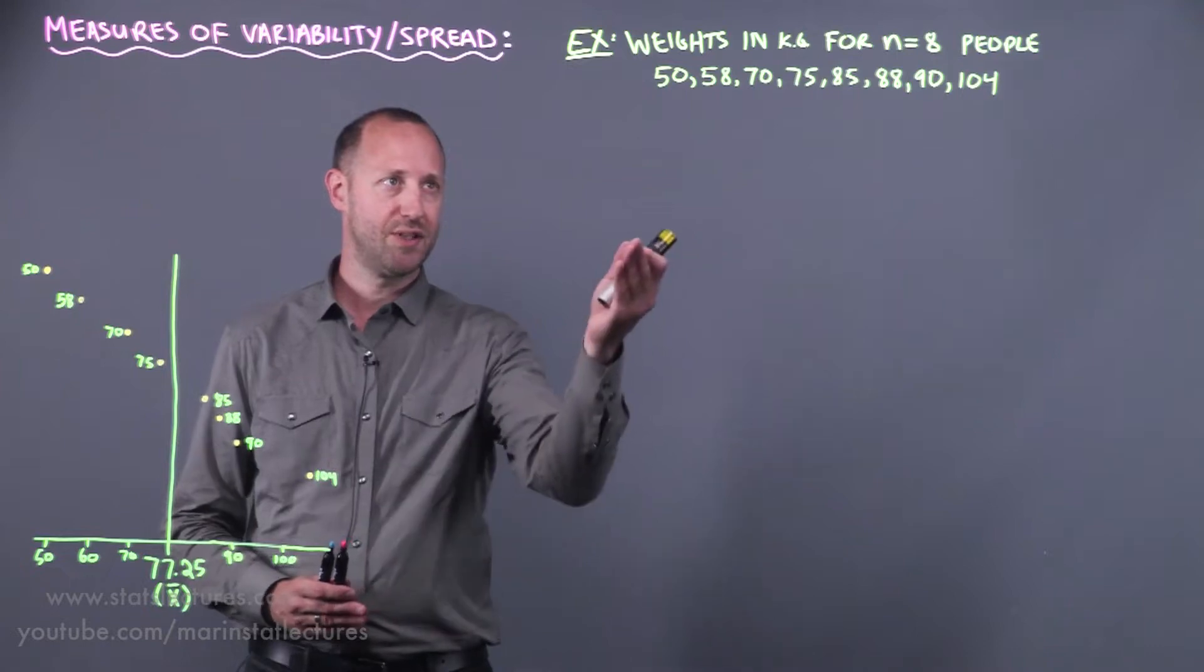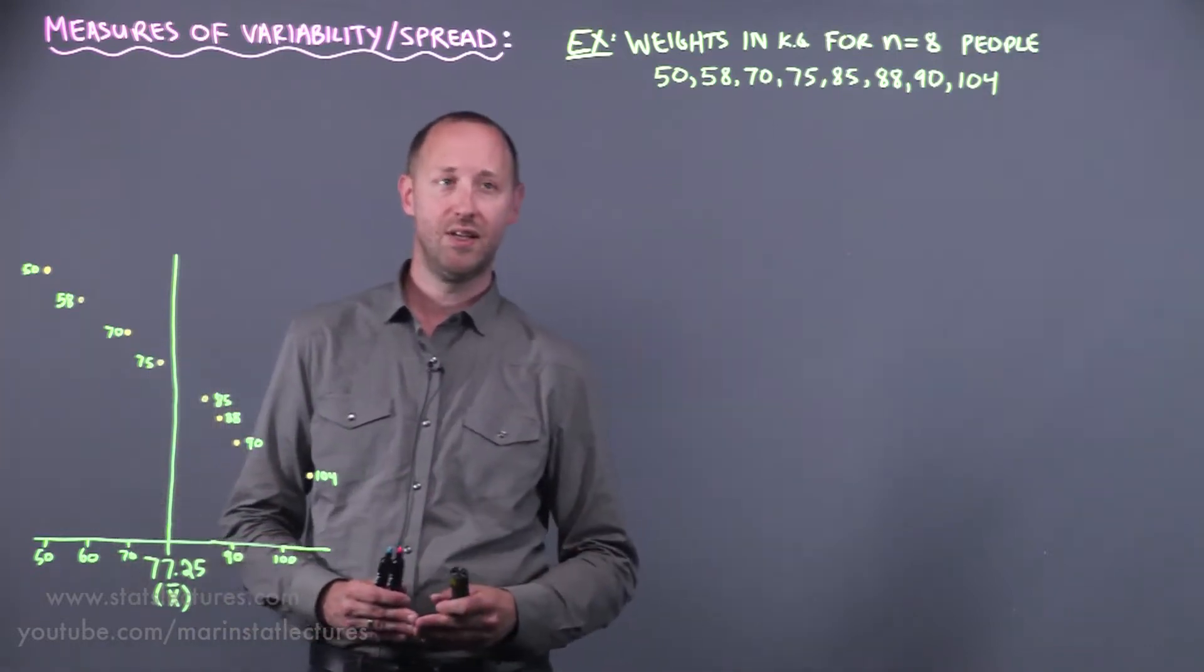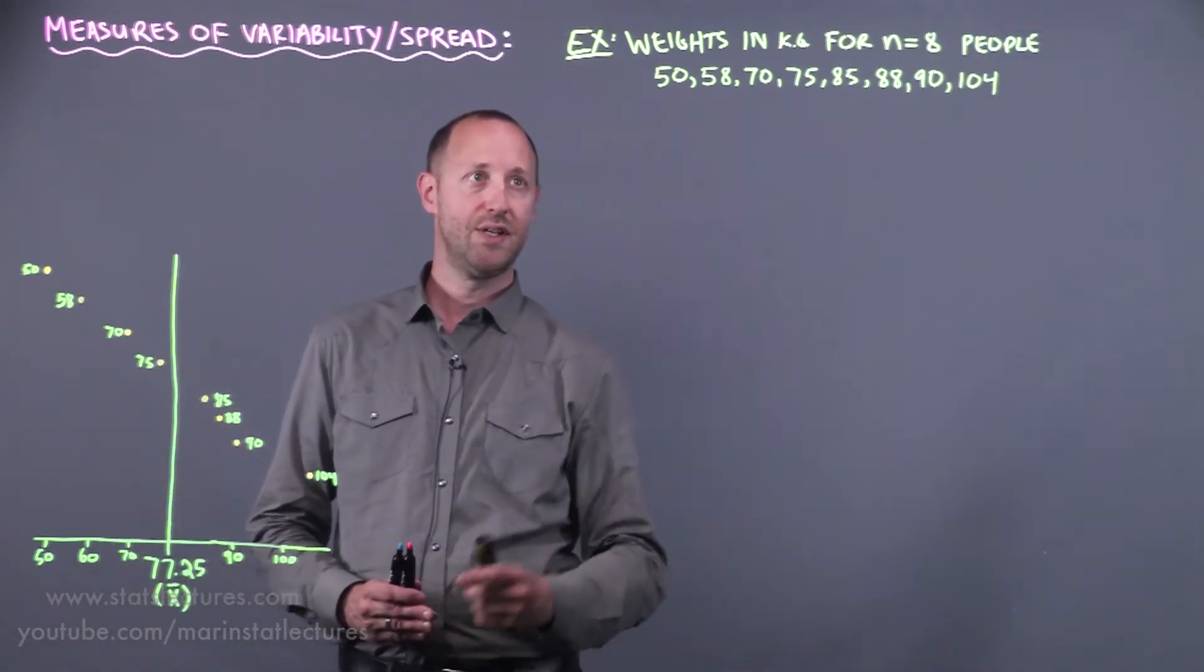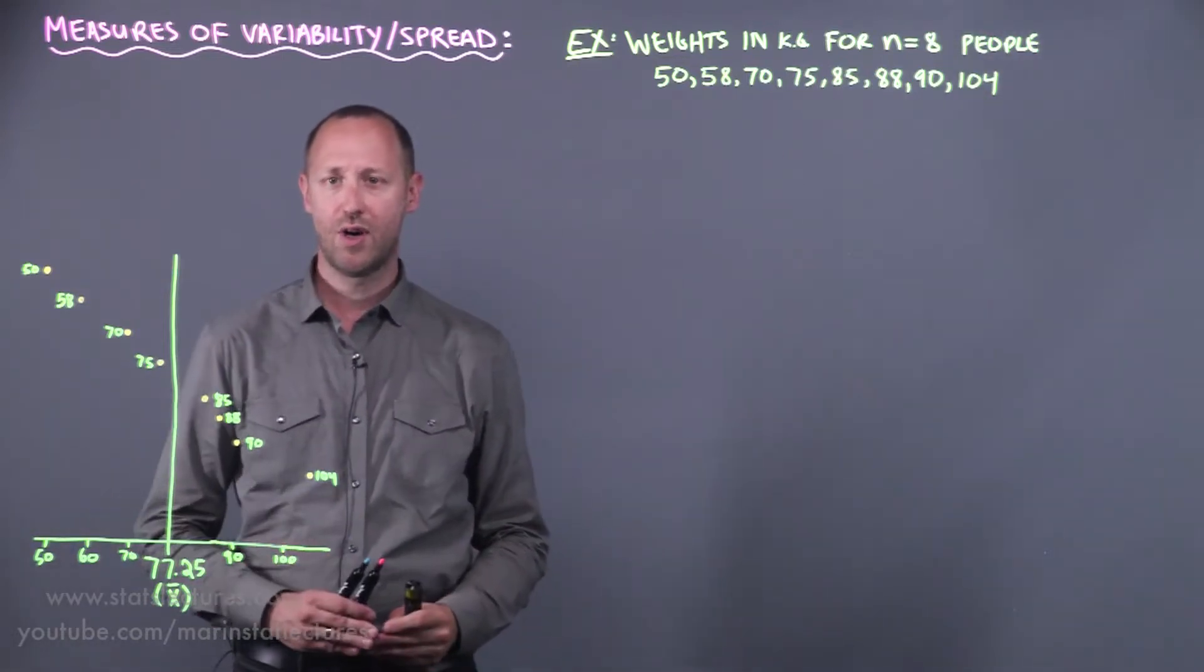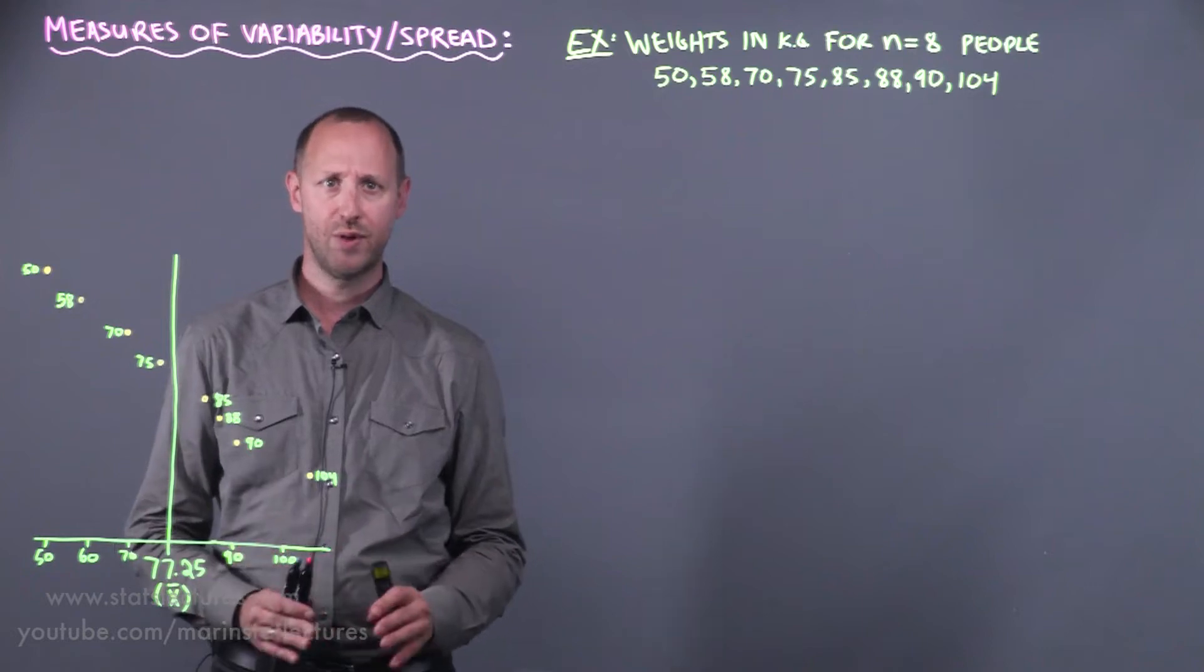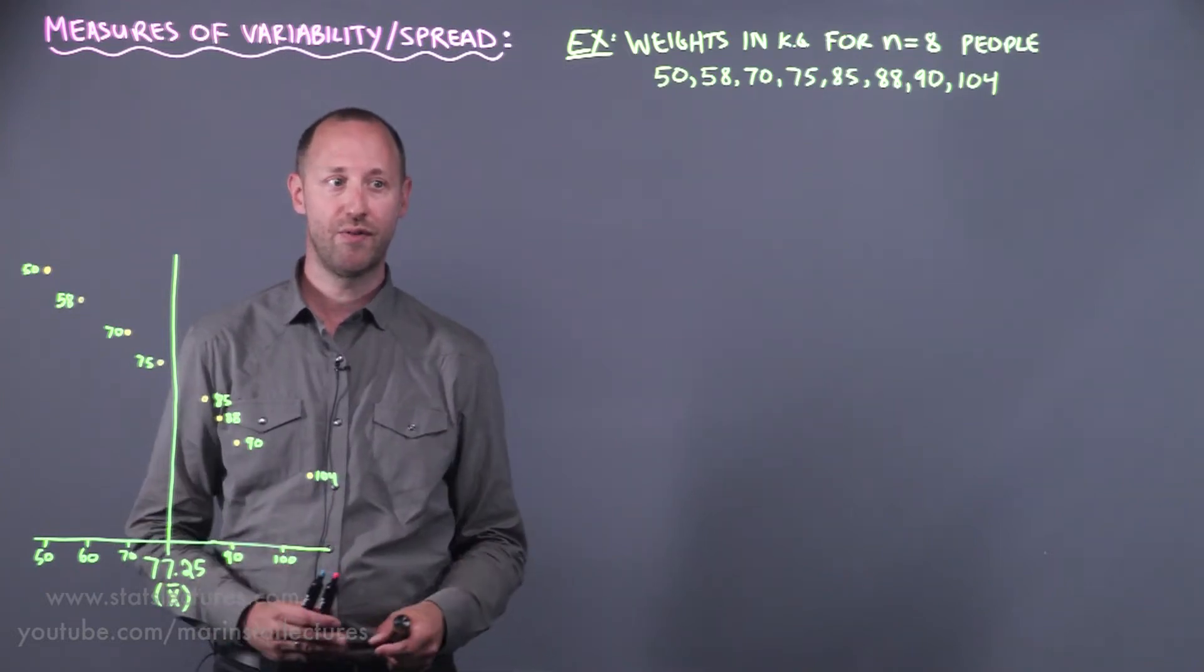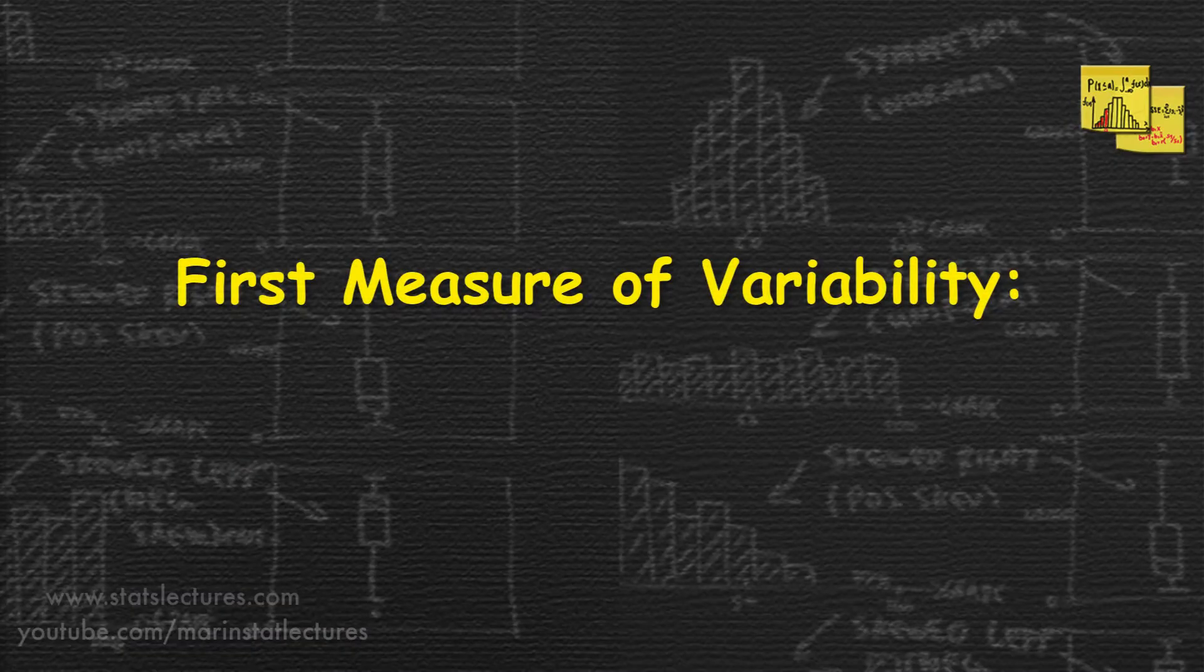For this discussion we'll use a simple example of having the weights in kilograms of eight individuals: 50, 58, all the way up to 104. I've also drawn those along a number line so we can visualize some of these measures of spread or variability.